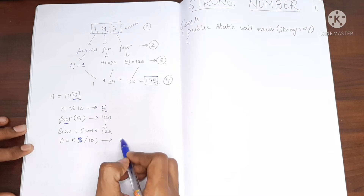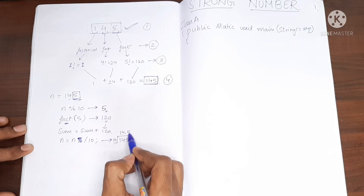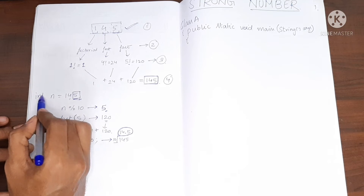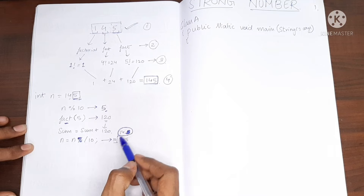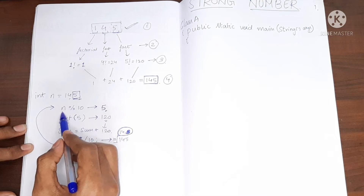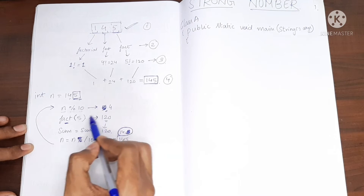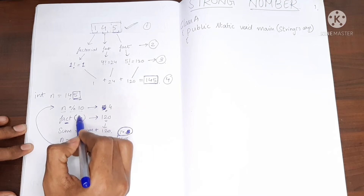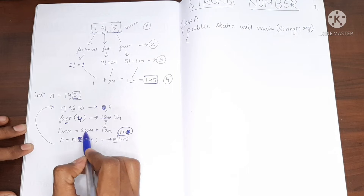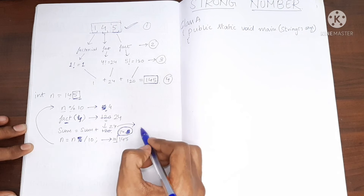Dividing 145 by 10 gives 14.5, but since n is of type int, it stores only the integer part, so n becomes 14. We repeat the process: 14 mod 10 gives us 4. We pass 4 into the factorial function, which returns 24. We already added 120 to sum, so now sum becomes 120 plus 24, which is 144.